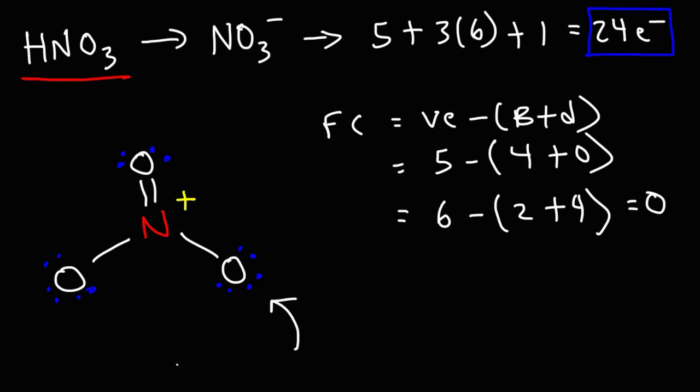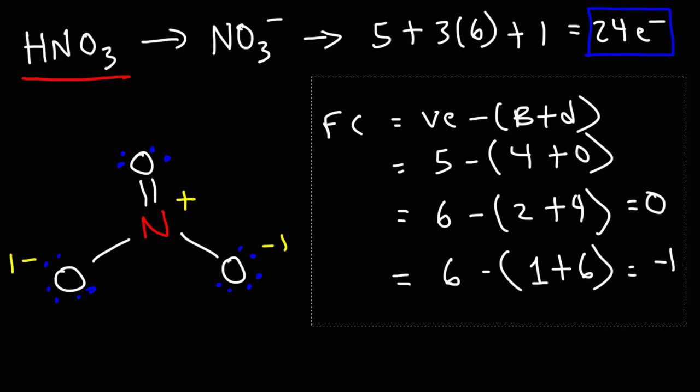But here it has 1 bond. It's going to have a charge. And so in this structure, oxygen has 1 bond, but it has 3 lone pairs, or 6 dots. So we get 6 minus 7, which is negative 1. So each of these two oxygen atoms have a minus 1 charge. So this is the Lewis structure of the nitrate ion.